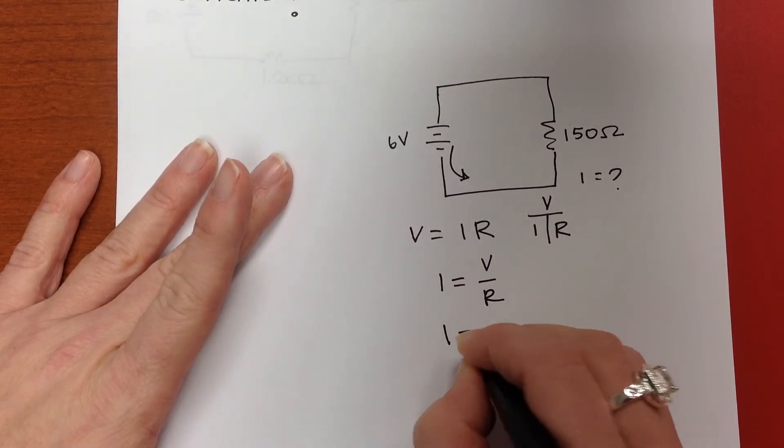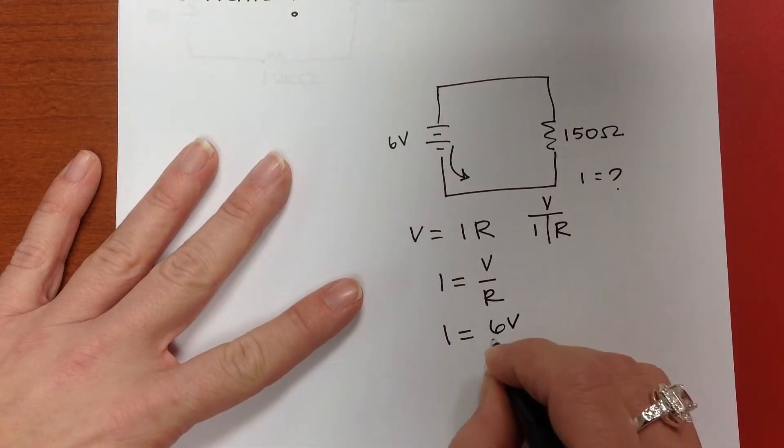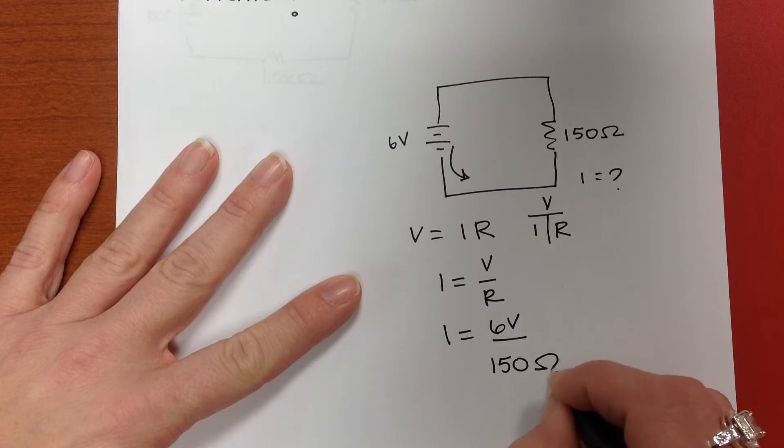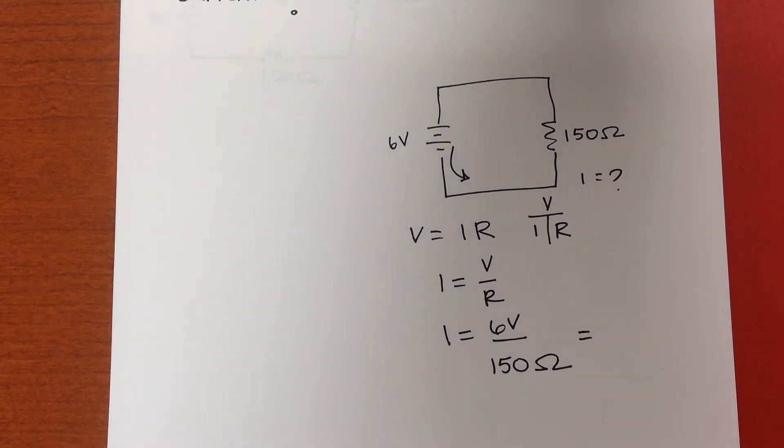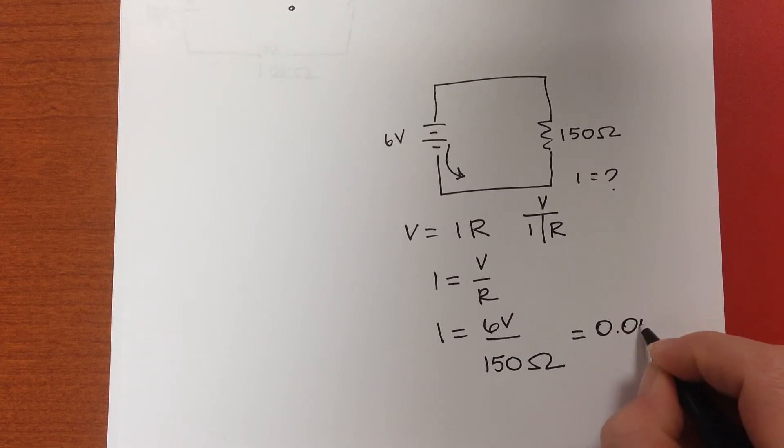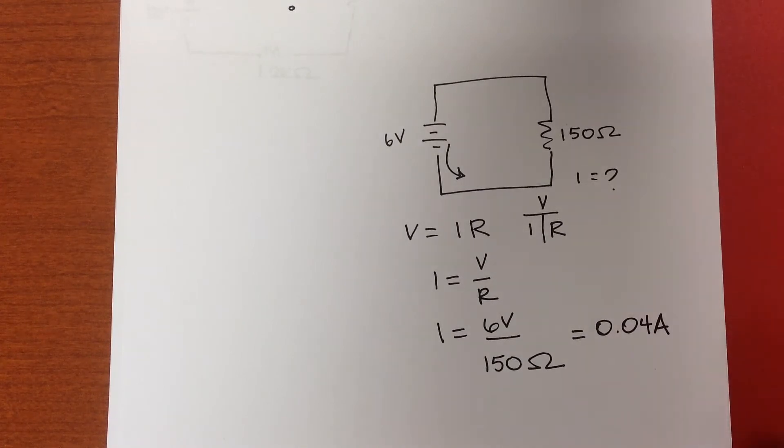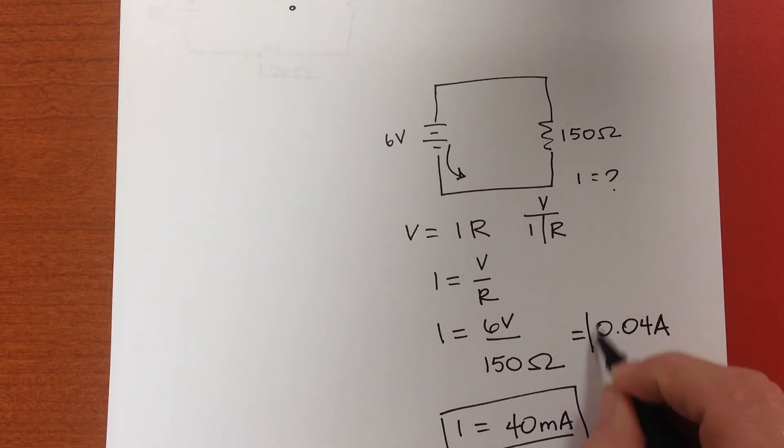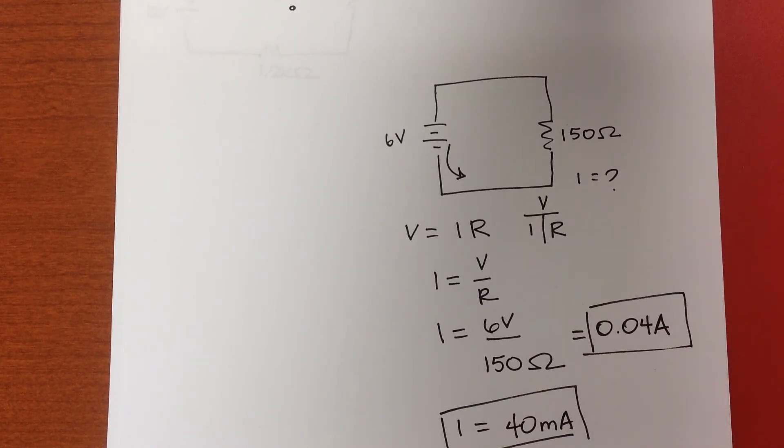So I is going to be equal to 6 volts divided by 150 ohms. When I punch that in on my calculator, I'm going to get 0.04 amps, or another way to write that would be I equals 40 milliamps. So there's an example of an Ohm's Law problem for you.